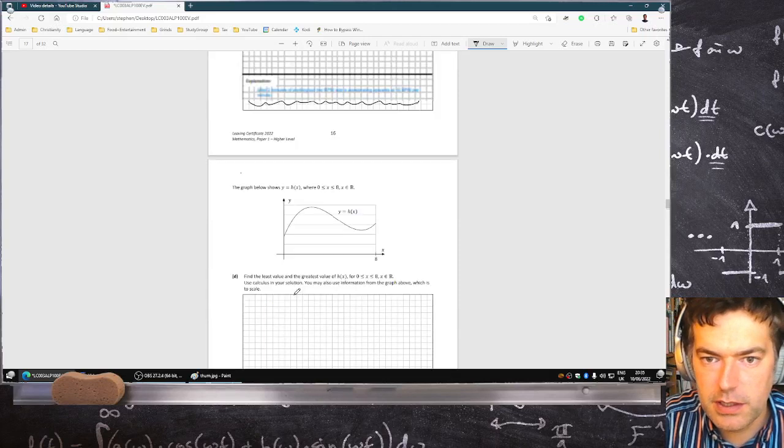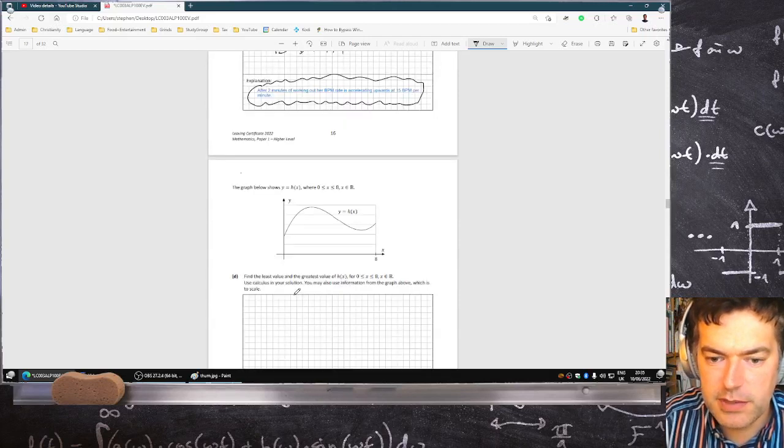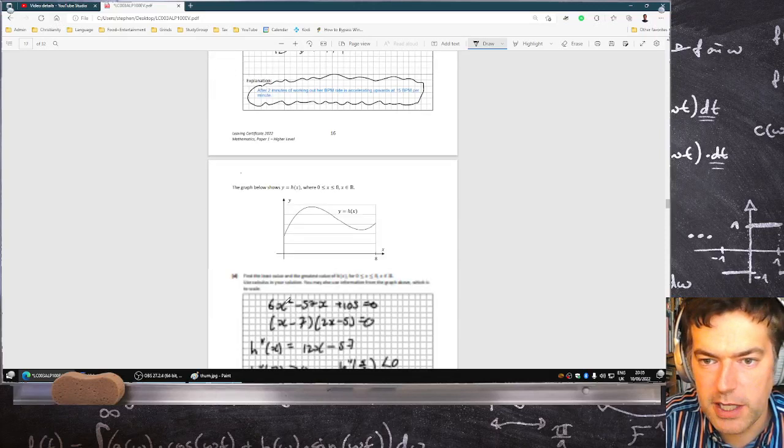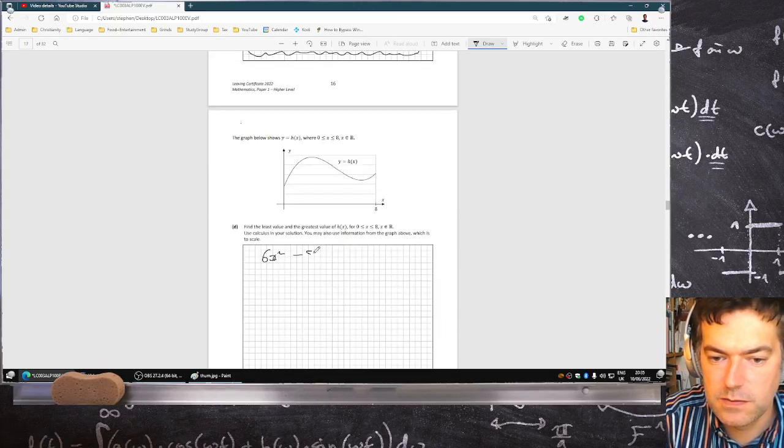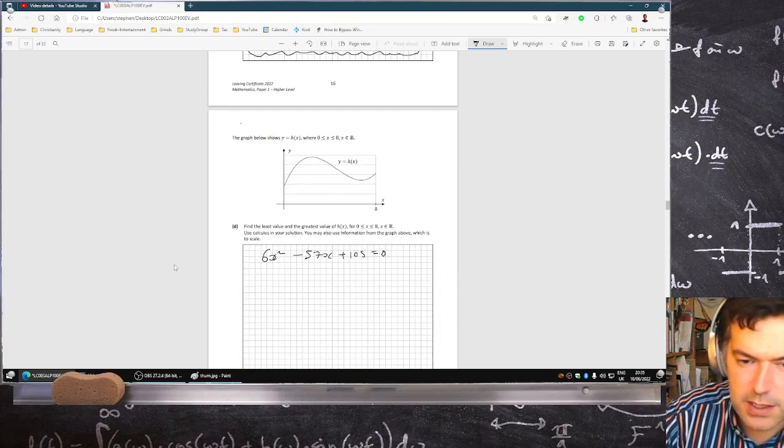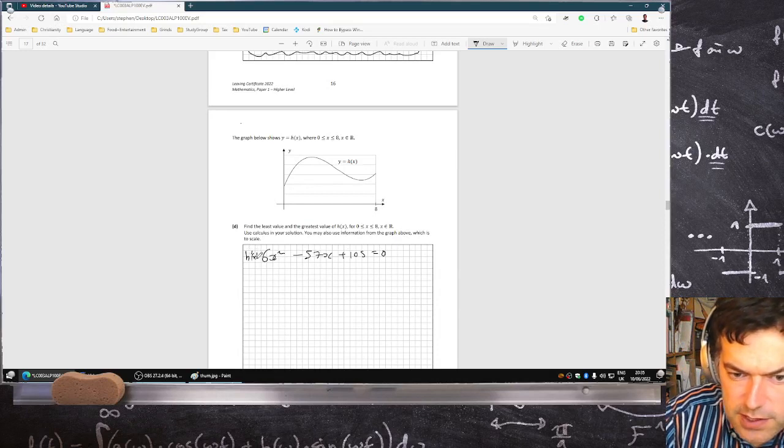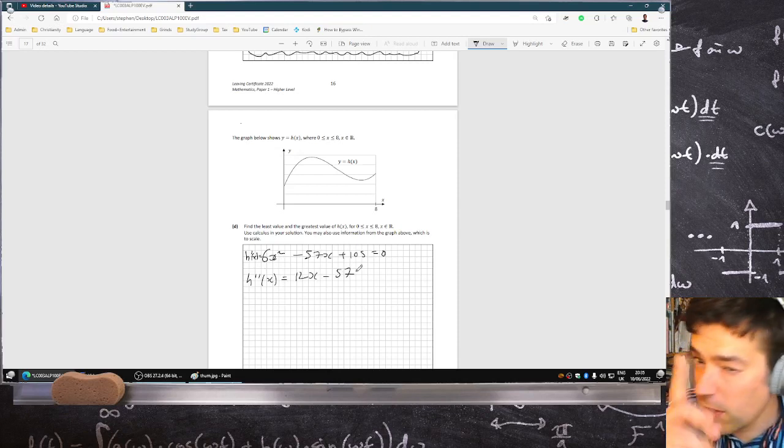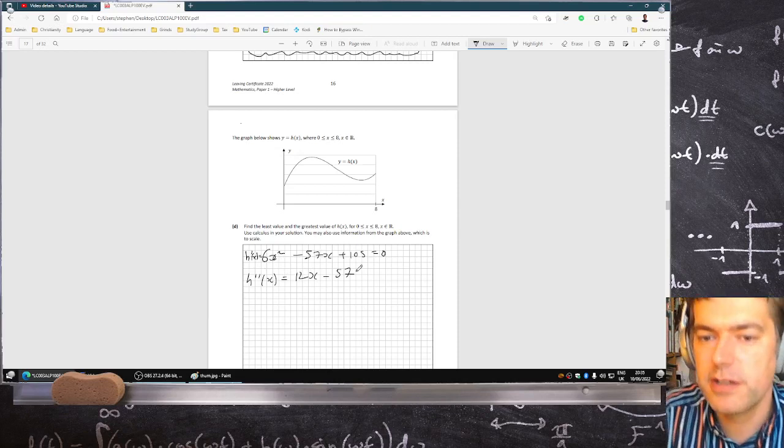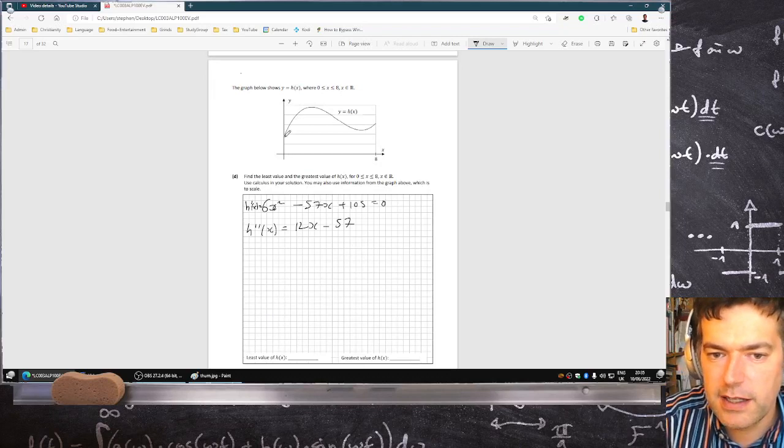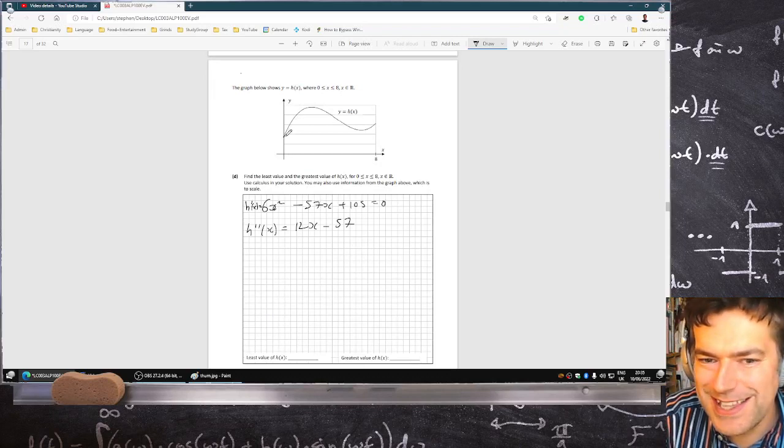So make the derivative equal to 0. 6x squared minus 57x plus 105 equals 0. That's the first derivative. And then the second derivative is 12x minus 57. Now what caught me out the first time I did this in my rush to get these done is somebody pointed out, I think it was Fintan, posted a comment saying that I didn't notice that this point is the minimum.